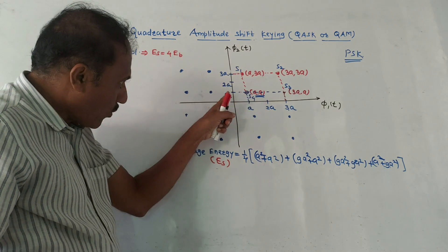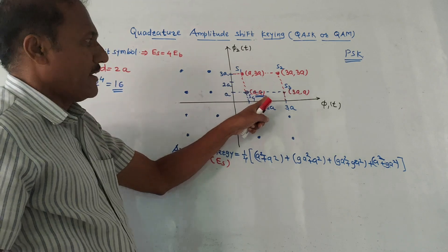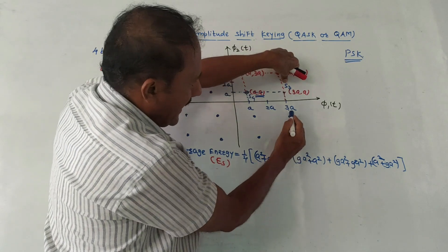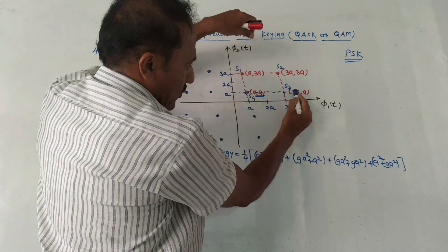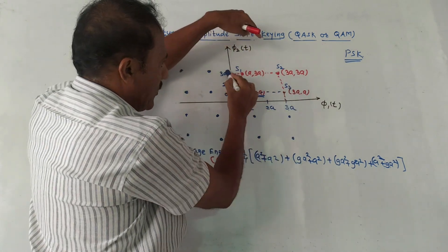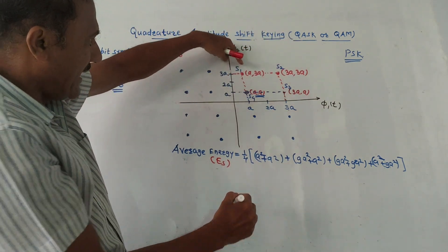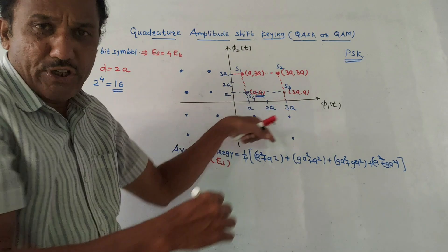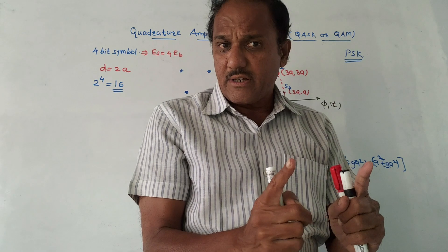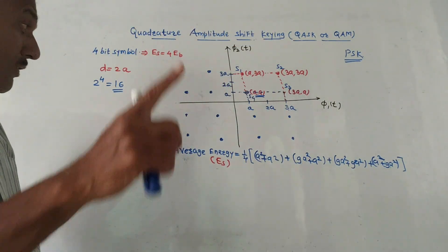I have written the coordinates of s4 as (a, a). Similarly, for s3, the x-coordinate is 3a and the y-coordinate is a, so (3a, a). For s2, the x-coordinate is 3a and the y-coordinate is 3a, so (3a, 3a). For s1, the x-coordinate is a and the y-coordinate is 3a. Accordingly I have written the coordinates — I am considering only the first quadrant, with four symbols s1, s2, s3, s4.